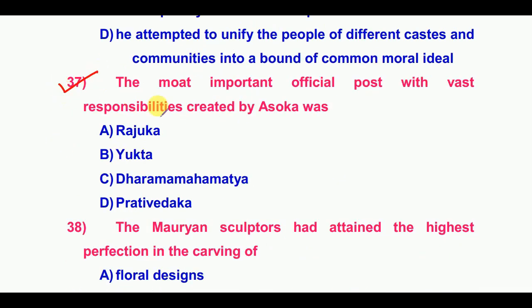Thirty-seventh question: The most important official post with vast responsibilities created by Ashoka was — the answer is option C: Dhamma Mahamatra.